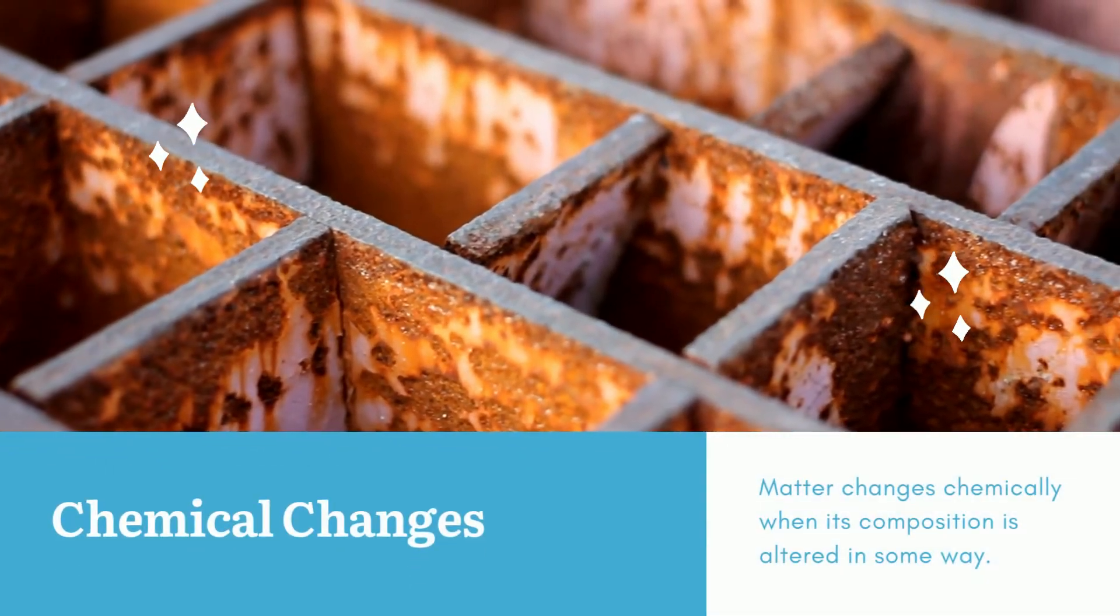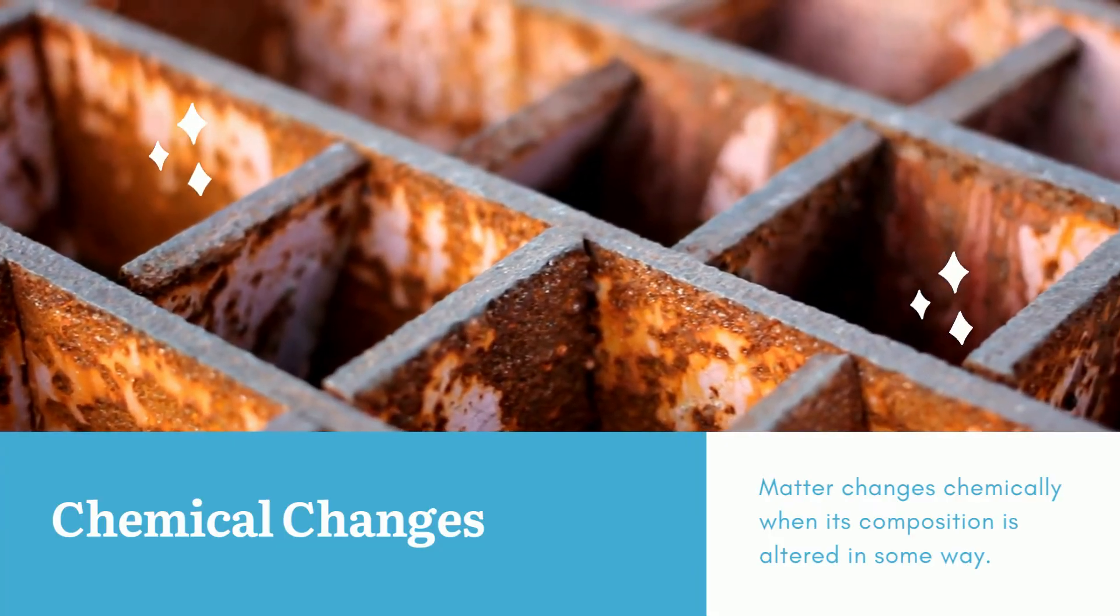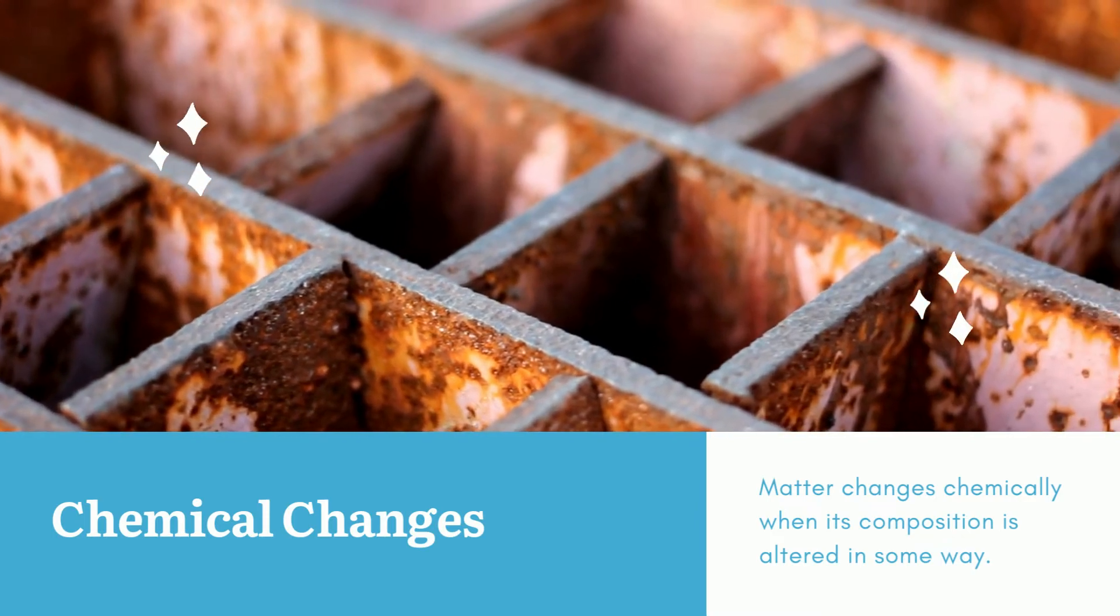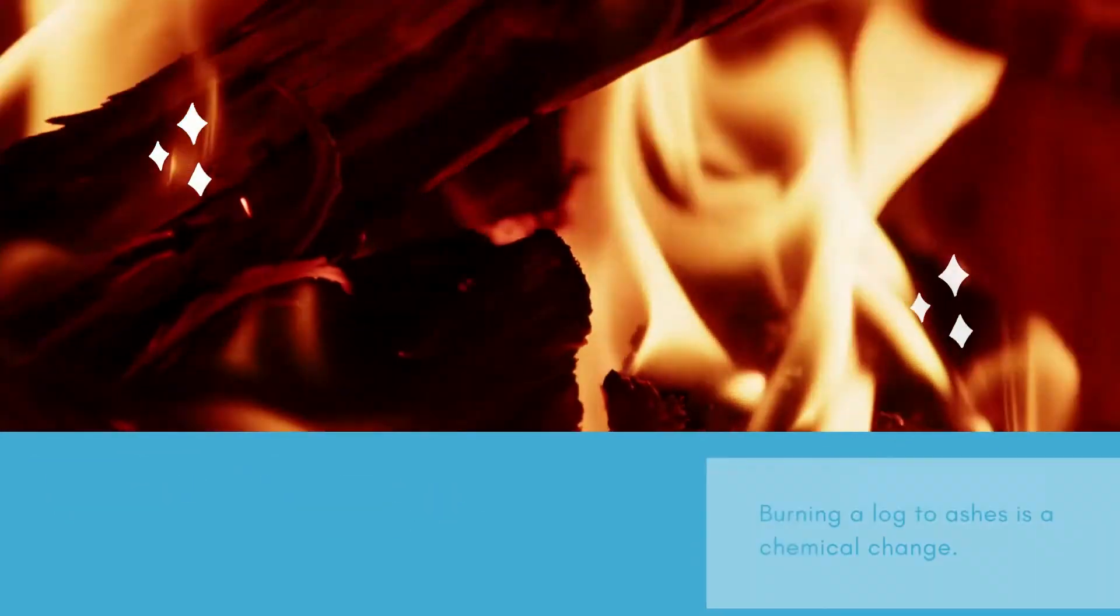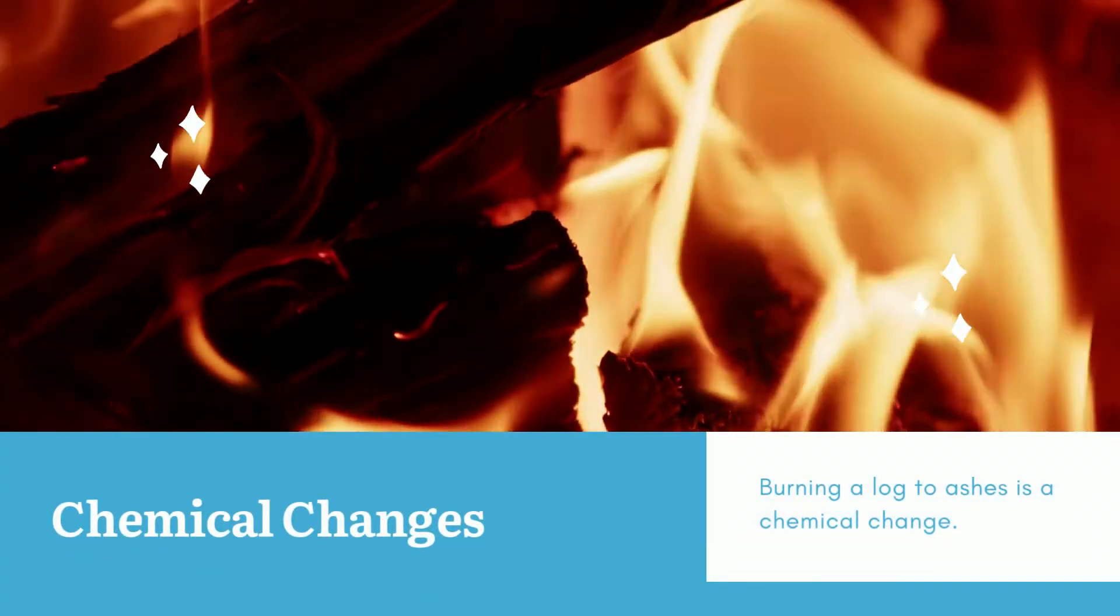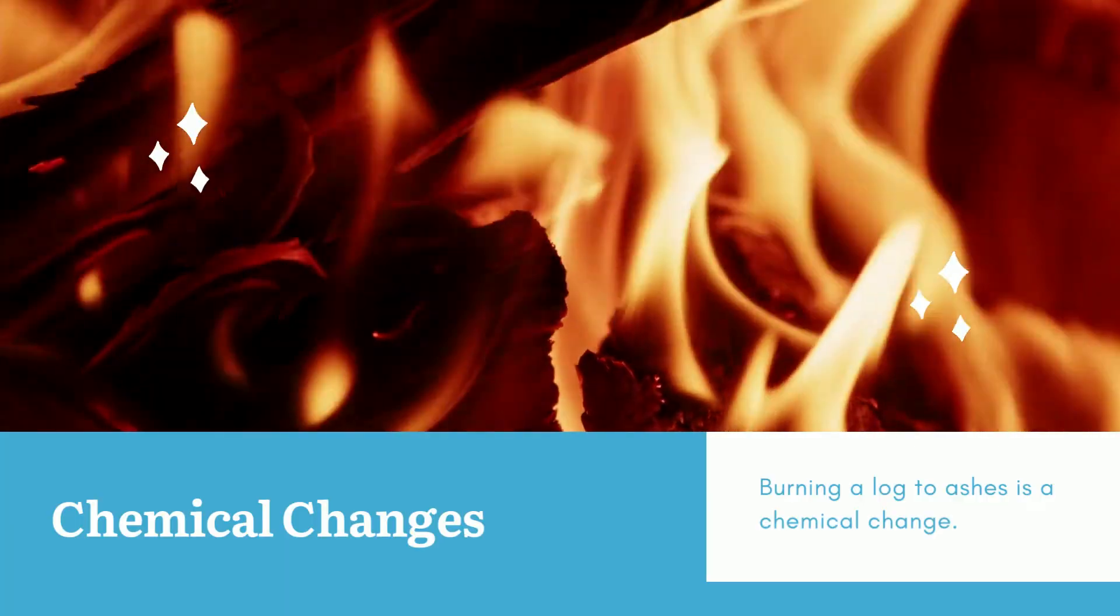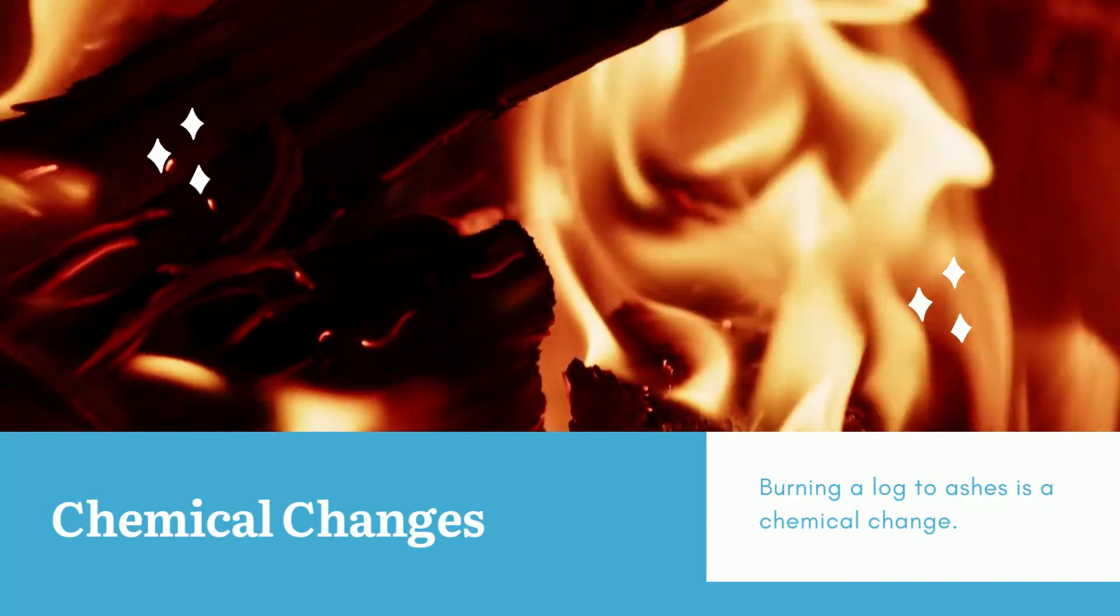Now let's take a look at chemical changes. Matter changes chemically when its composition is altered in some way. You might remember that chemical reactions alter the composition of its products, creating other types of substances. Therefore, a substance has to undergo a chemical reaction to cause a chemical change.